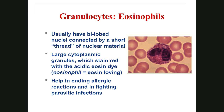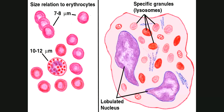The eosinophil is very important for ending allergic reactions and fighting parasitic infection. In this picture, you can see the cartoon of the eosinophil with red specific granules and lighter granules which are the lysosomes. The eosinophil contains a bilobed nucleus, and when you compare the size of eosinophil and red blood cells, you see that red blood cells are smaller. This cell is specific for fighting parasitic infection and ending allergic reactions.